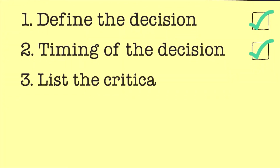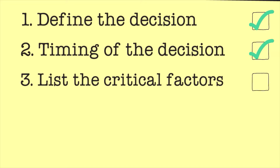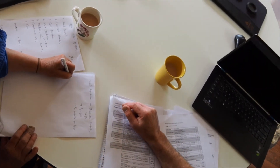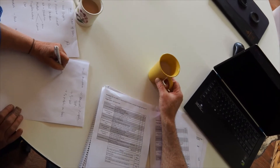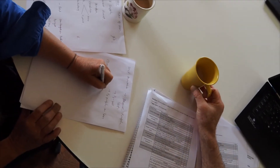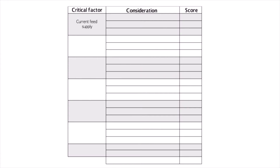Step three is to make a list of the critical factors that are involved. Quite often there are six or eight critical factors to consider. These often start with the facts, such as how much feed we might have available, but can and should also include gut feel and emotional factors such as ability to supplementary feed if needed, or implications on cash flow. For selling stock, the critical factors we consider are: current feed supply, the seasonal forecast especially rainfall, stored soil moisture, weight and condition of stock, current and future price of stock, and supplementary feeding.